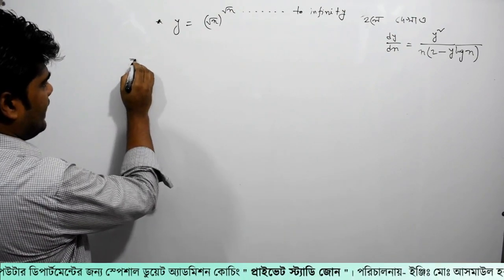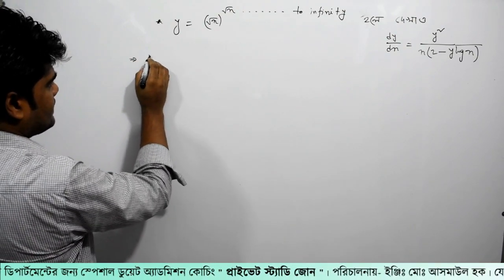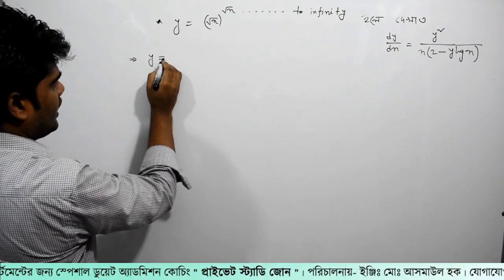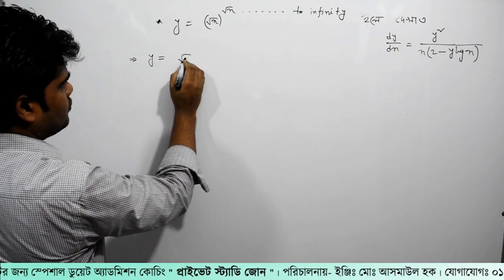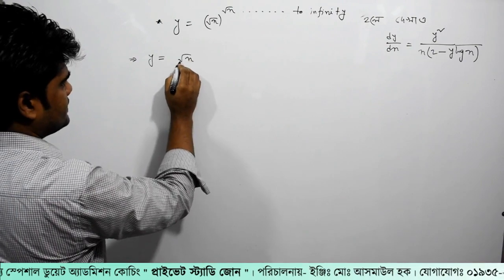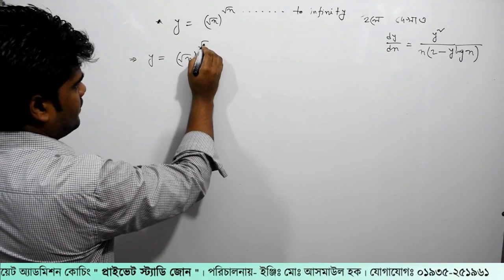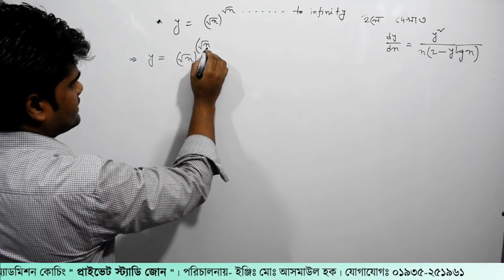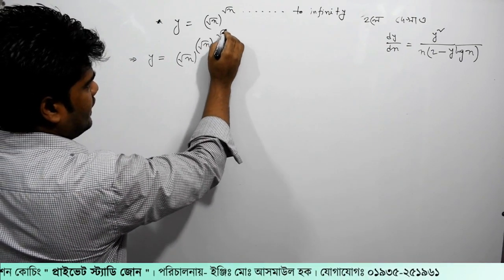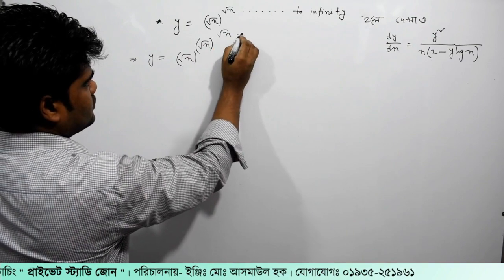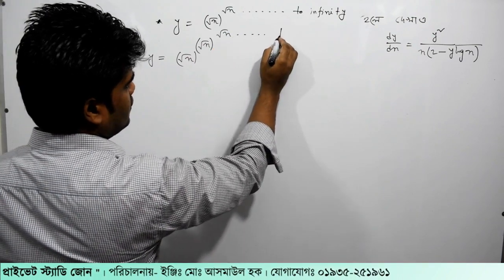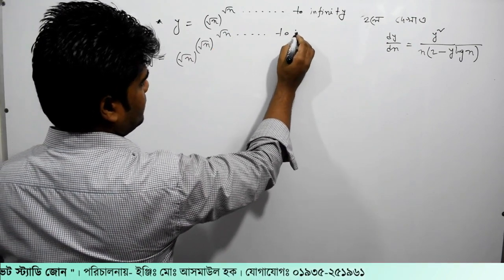I'm going to write this line. So y equals root over x, plus root over x, plus root over x, plus root over x, dot dot dot dot to infinity.